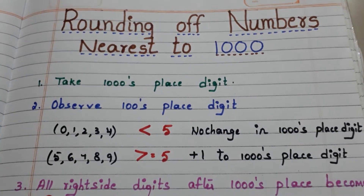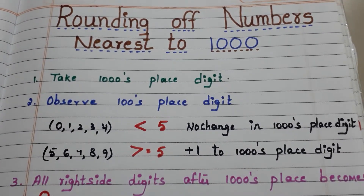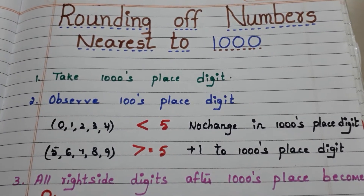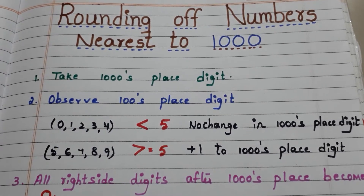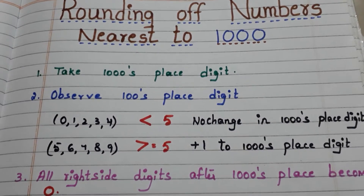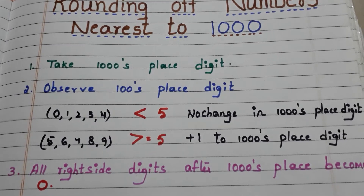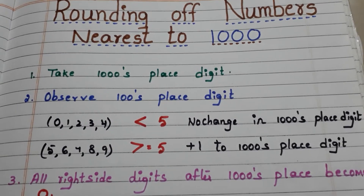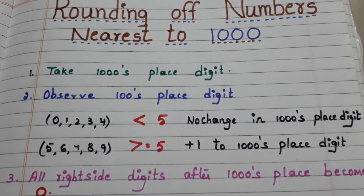Hi all, welcome back to my channel. In this video we will have a look at how to round off numbers nearest to 1000. Basically there are three steps in rounding off numbers nearest to 1000.